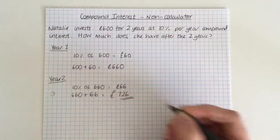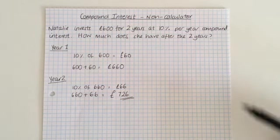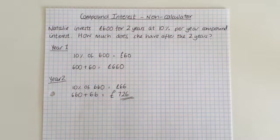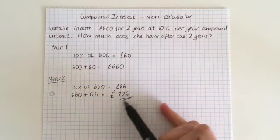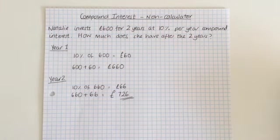Obviously, if there were more years, you'd just keep going in the same method. They don't tend to put more than three years on a non-calculator paper. It just could be worded differently. It could be that it's what does she have at the end. It could be how much interest has she earned after the two years. And it's how much more basically she's got in the account. Or you do the £60 plus the £66 and that's how much interest she's earned.